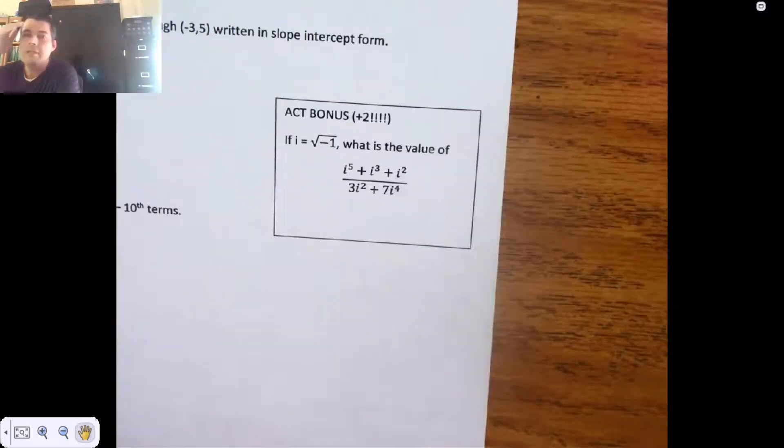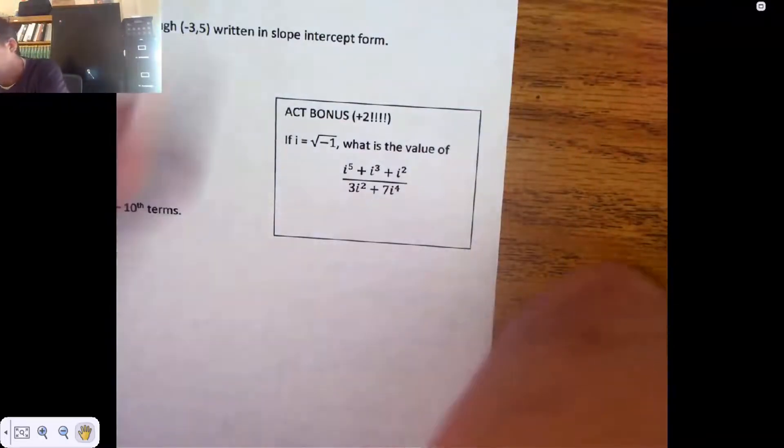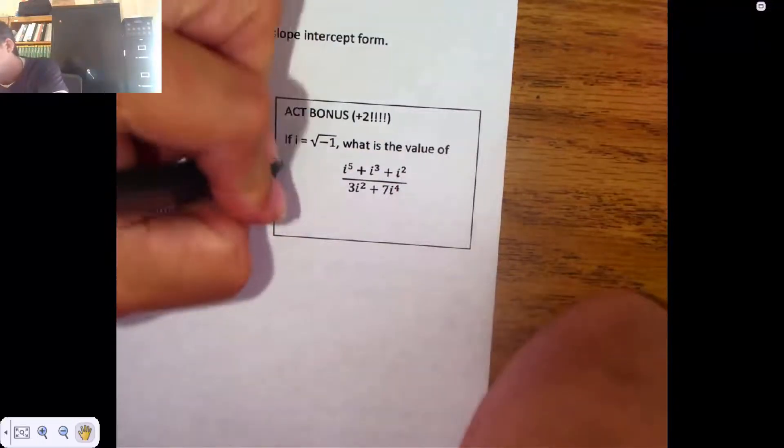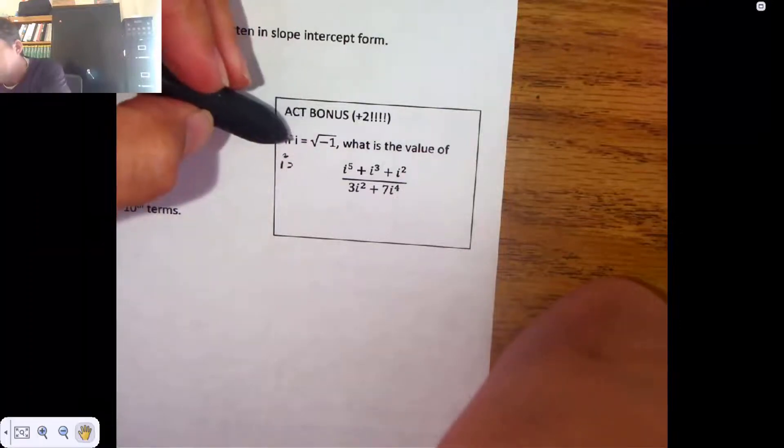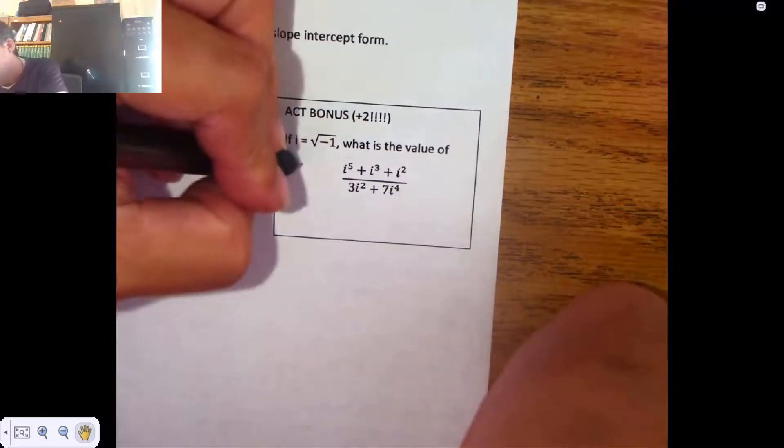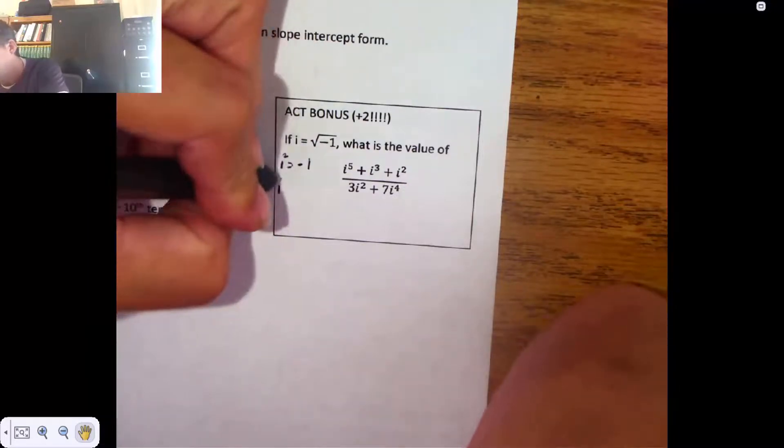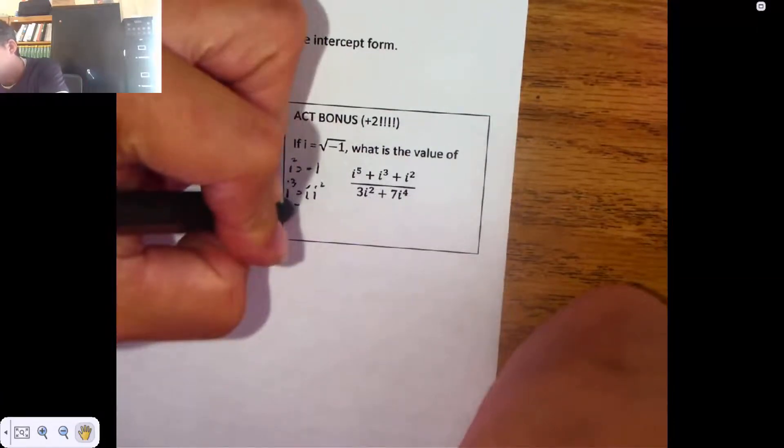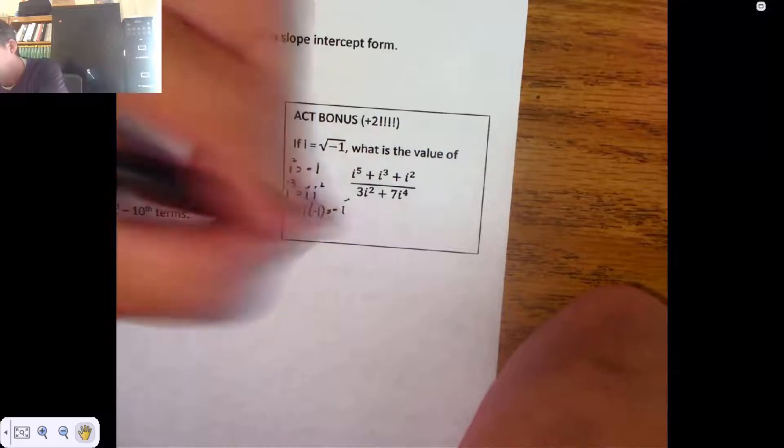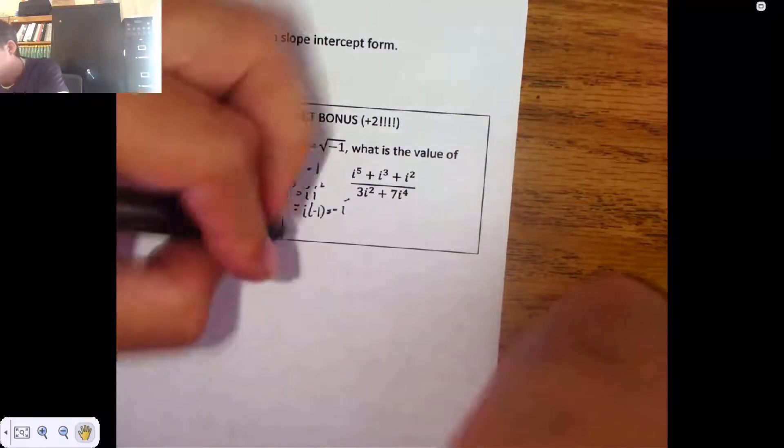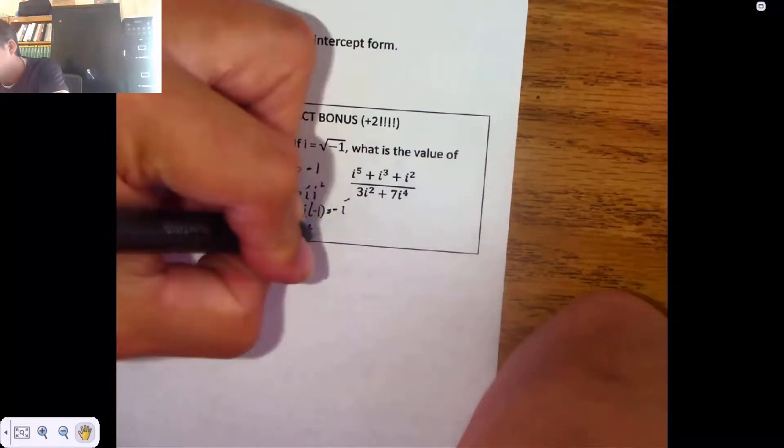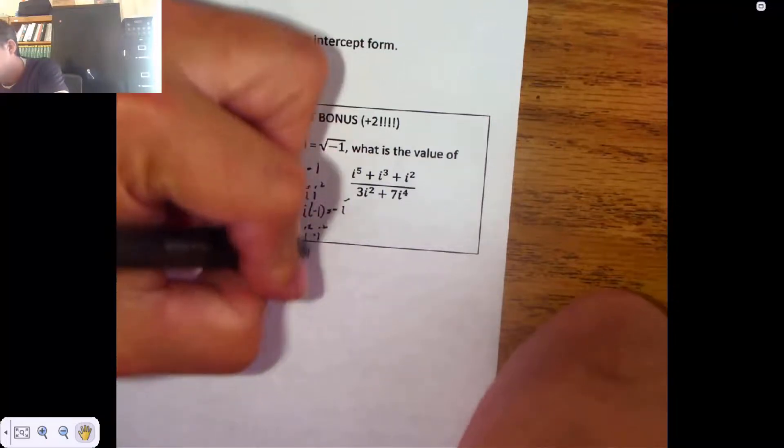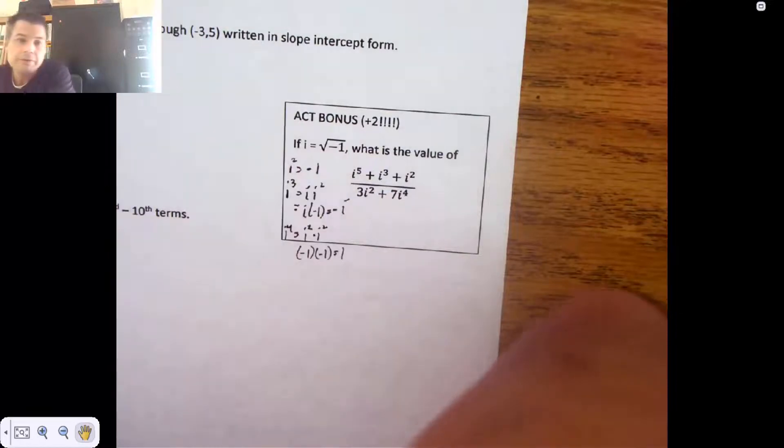All right, what's up next? ACT bonus, which is worth two. If I is the root of negative one, what is the value of such and such? I keep writing this down, but these actually come by working with this. If I square both sides, I'd get I squared. And if I square the root of a negative one, I'd get negative one. I cubed is I times I squared, which is I times a negative one, which is negative I. That's where it came from. I to the fourth is an I squared times an I squared, which is a negative one times a negative one, which is one. So those are the ones I have to know.